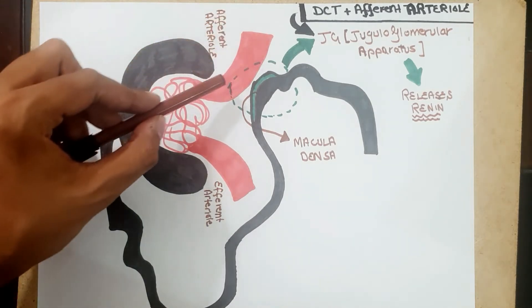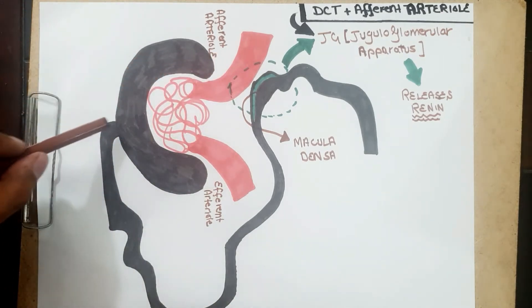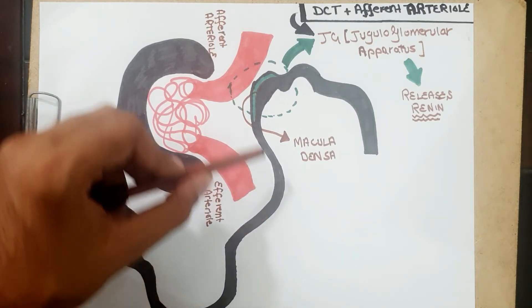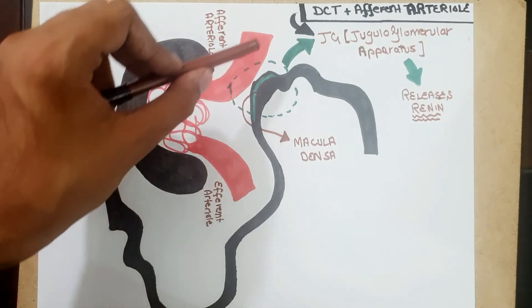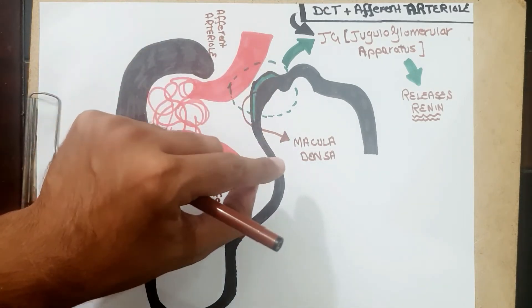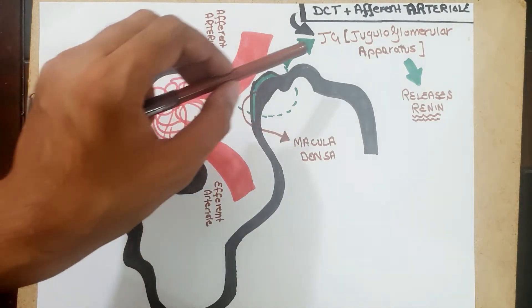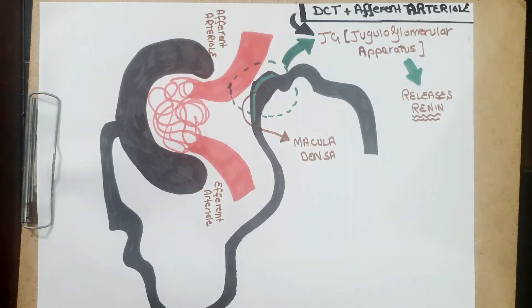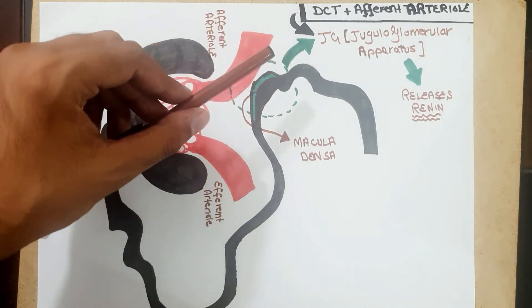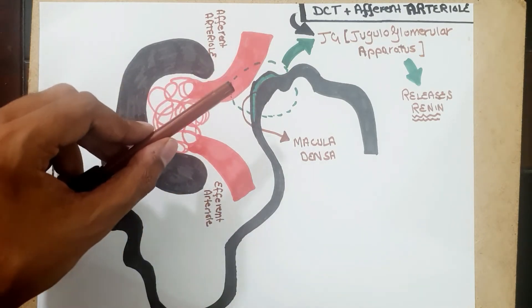The distal convoluted tubule (DCT) comes into contact with the afferent arterioles. At the point of contact, the DCT is thickened — this thickened portion comprises the macula densa. This whole apparatus is called the juxtaglomerular (JG) apparatus, which secretes renin. Renin is further converted into angiotensin and subsequently into aldosterone. The JG apparatus is made up of the DCT plus the afferent arterioles — the contact point from where renin is released.